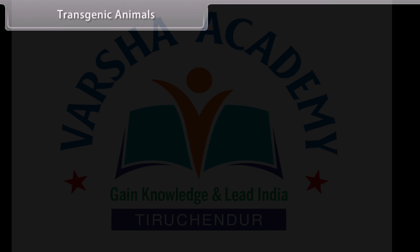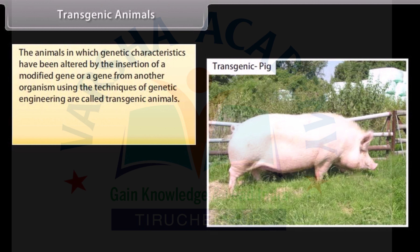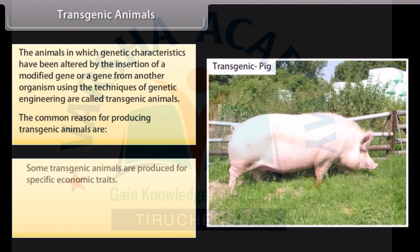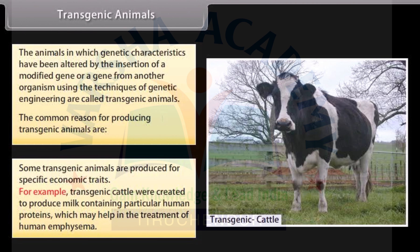Transgenic animals: Animals in which genetic characteristics have been altered by the insertion of a modified gene or a gene from another organism using the techniques of genetic engineering are called transgenic animals. Some transgenic animals are produced for specific economic traits. For example, transgenic cattle were created to produce milk containing particular human proteins which may help in the treatment of human emphysema.